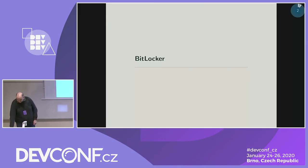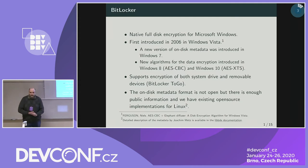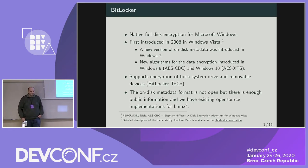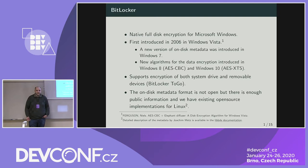Let's start talking about BitLocker. As you probably know from the abstract of this talk, BitLocker is a technology from Microsoft Windows. It's a full disk encryption technology, first introduced in 2006 in Windows Vista and still used today with minor changes. There was some on-disk metadata change in Windows 7 and some encryption algorithm changes in Windows 8 and the latest versions of Windows 10. It supports encryption of both system drives and removable drives. Encryption for removable drives is called BitLocker to Go.